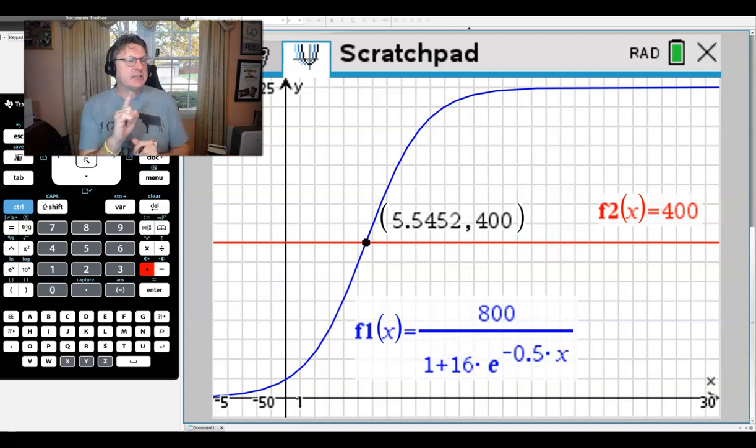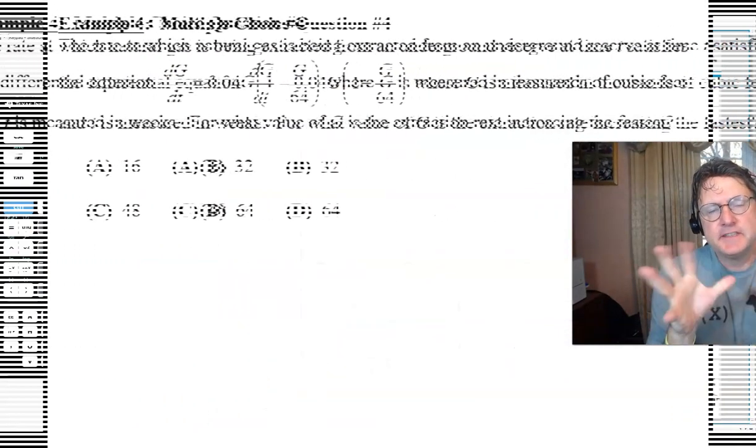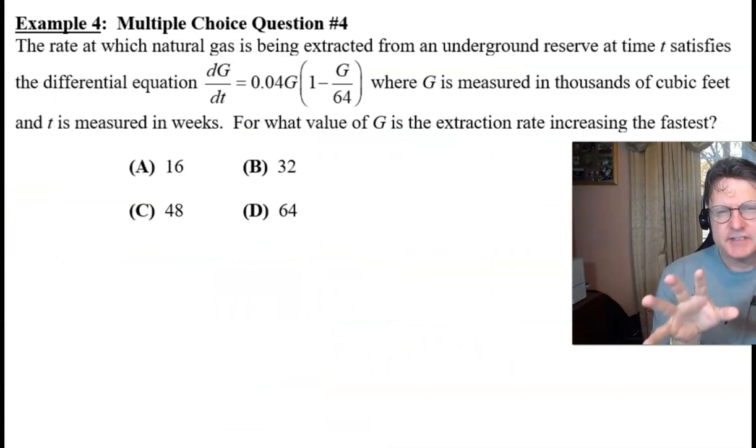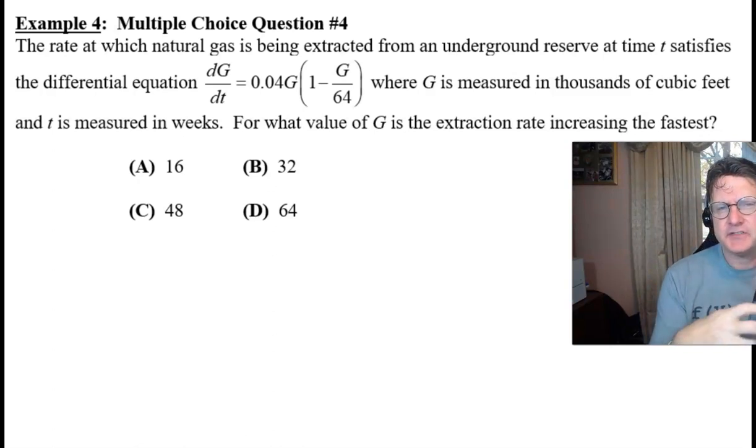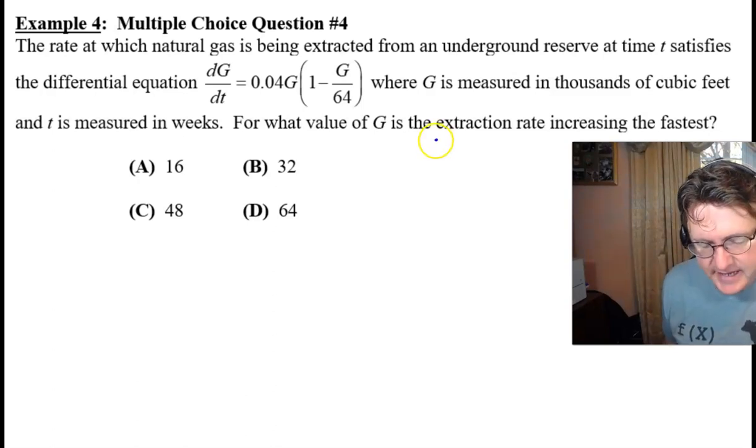Now let's take a look at example 4. Now this being our final multiple choice question is going to still stay focused on the theme of when our population tends to increase the fastest, but it's going to ask it in a little bit different light. It says the rate at which natural gas is being extracted from an underground reserve at time t satisfies the differential equation. So we have dG/dt = 0.04G(1 - G/64), where G is measured in thousands of cubic feet and t is measured in weeks. For what value of G is the extraction rate increasing the fastest?